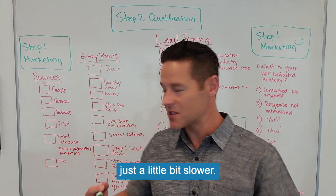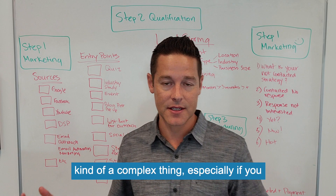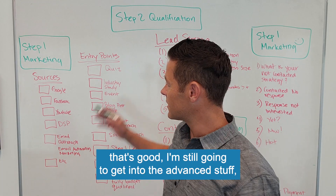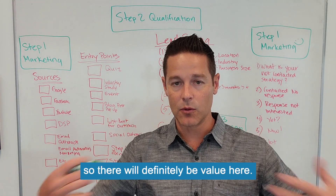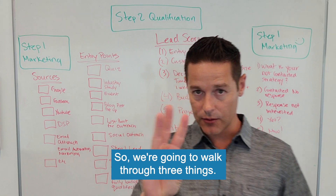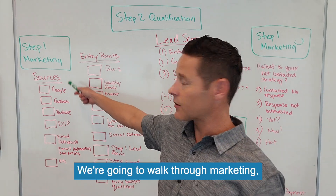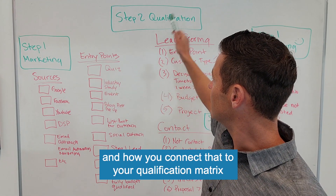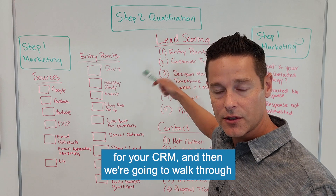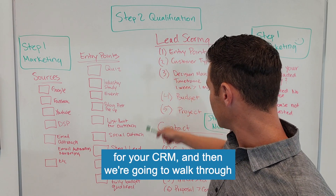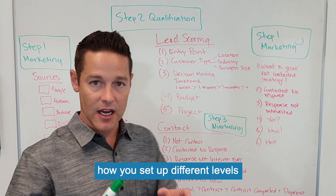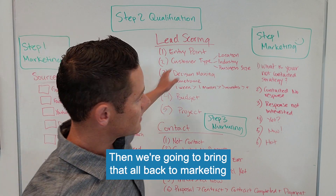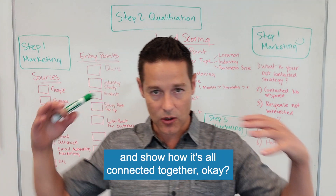For this class, I'm going to go just a little bit slower and walk you through what is kind of a complex thing, especially if you haven't done it before. We're going to walk through three things: marketing entry points, how you connect that to your qualification matrix for your CRM, how you set up different levels of contact for the prospect, and then bring it all back to marketing to show how it's all connected together.